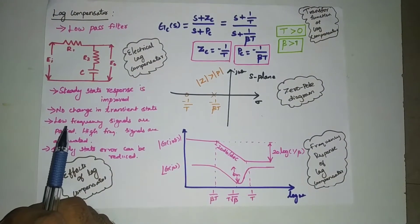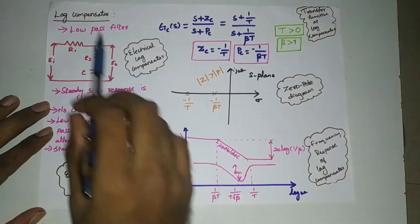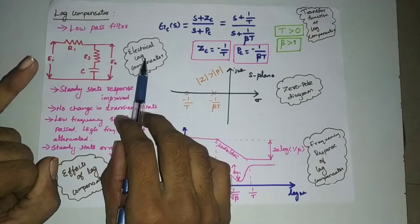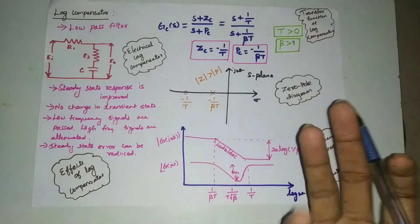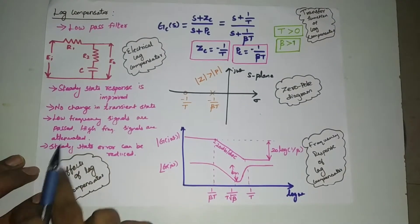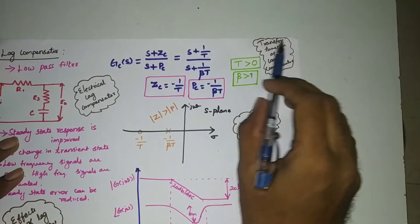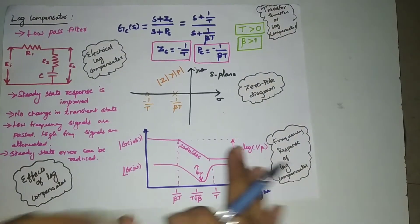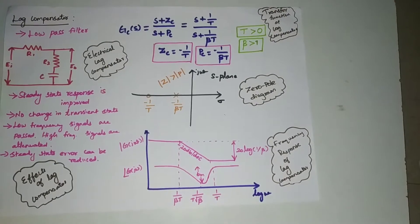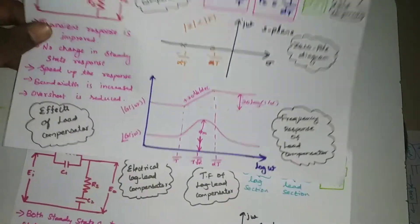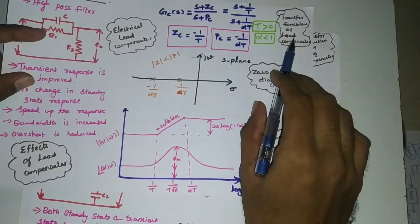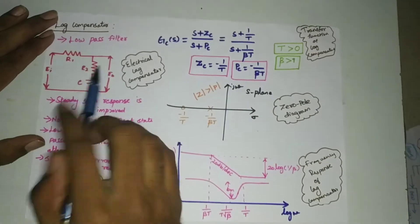While studying the basics of compensators, five things we need to concentrate on: one is the electrical network — the circuit diagram for the compensator; the effects of compensators after adding a particular compensator to see what the effect will be in a closed loop system; the transfer function of the compensators; the zero-pole diagram; and the frequency response, meaning the Bode plot.